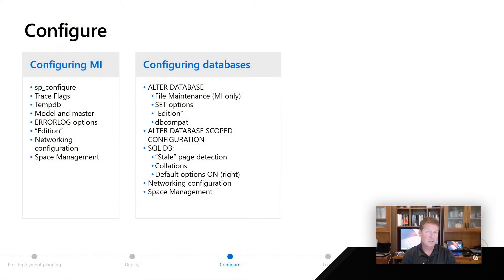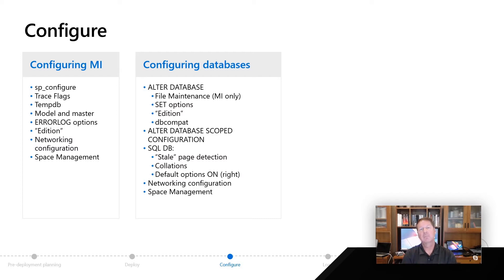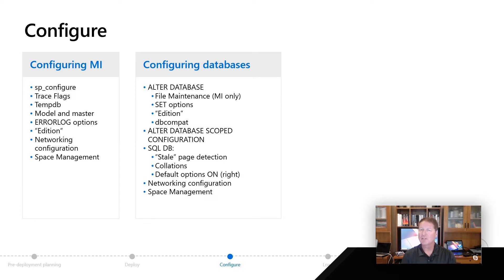Many of you have seen we've introduced something called ALTER DATABASE Scoped Configuration for things like max degree of parallelism. All those options exist for you, both for MI and for DB. You might find it interesting that aside from network configuration and different space management choices, which we'll talk about in a second, Azure Database has some interesting properties.